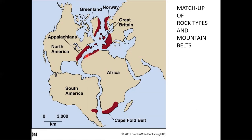If you put the continents back together in the way they seem to fit, you see a match-up of mountain ranges. The Appalachian Mountains match the Atlas Mountains in Africa. At one time when everything was together, the Appalachians extended into Greenland, Great Britain, and portions of Scandinavia — and we have the same rock matching in Africa and South America.